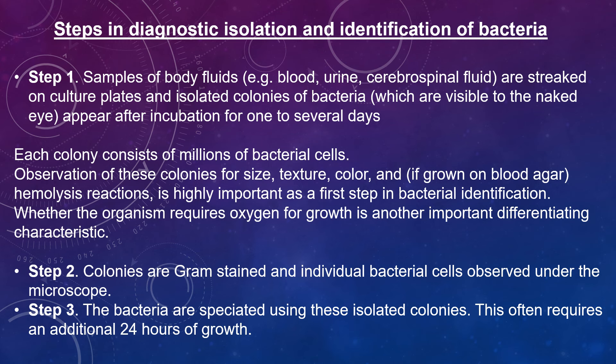Whether the organism requires oxygen for growth is another important differentiating characteristic. Colonies are gram stained and individual bacterial cells observed under the microscope. Bacteria are speciated using isolated colonies, which often requires an additional 24 hours of growth. You would take colonies from the blood agar plate and streak onto another plate to confirm growth, and further tests such as oxidase tests and catalase tests can also be performed.